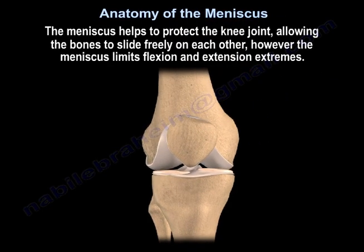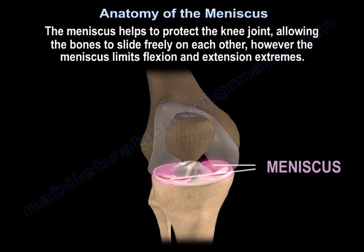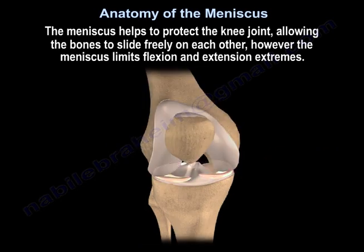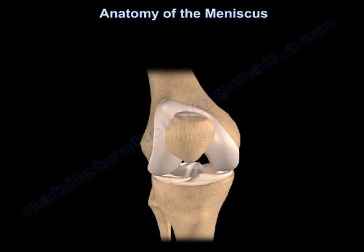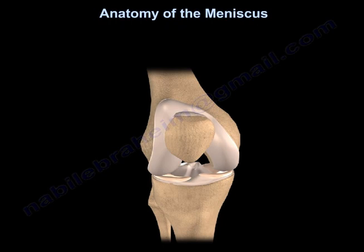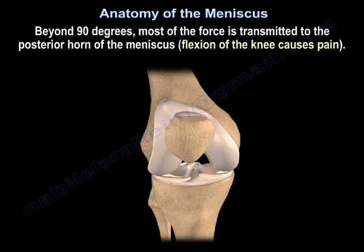The meniscus helps to protect the knee joint, allowing the bones to slide freely on each other; however, the meniscus limits flexion and extension extremes. The meniscus transmits 50% of force in extension and 90% of force in flexion. Beyond 90 degrees, most of the force is transmitted to the posterior horn of the meniscus, so deep flexion of the knee causes pain.